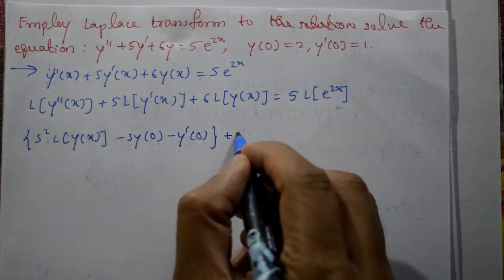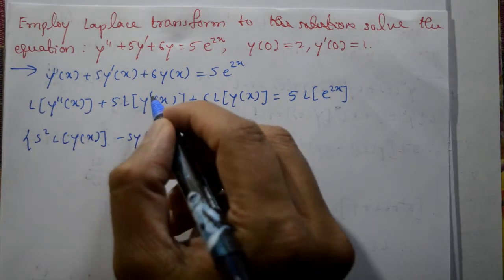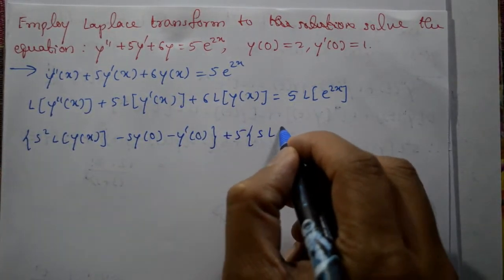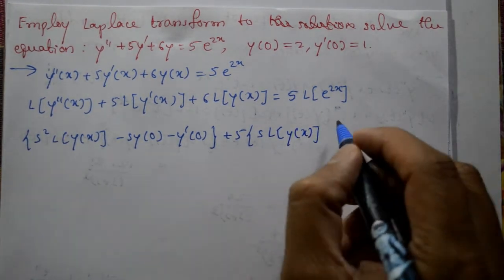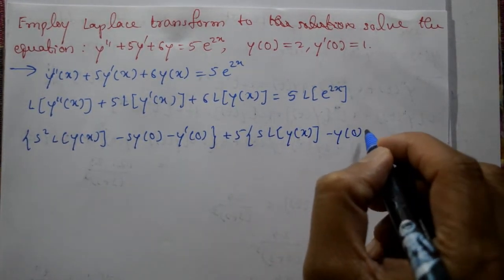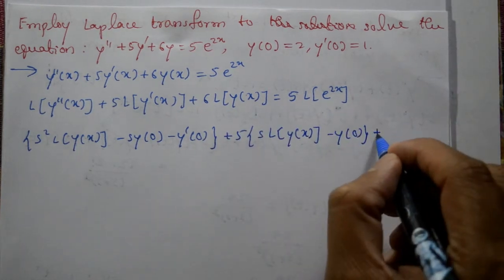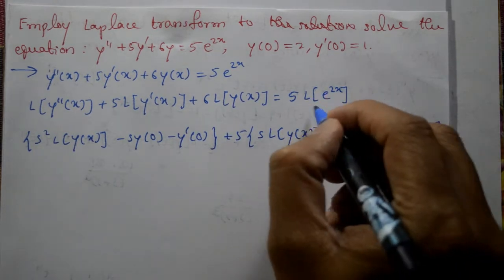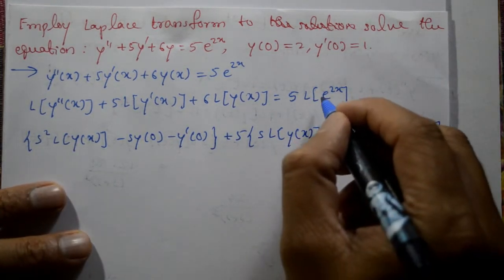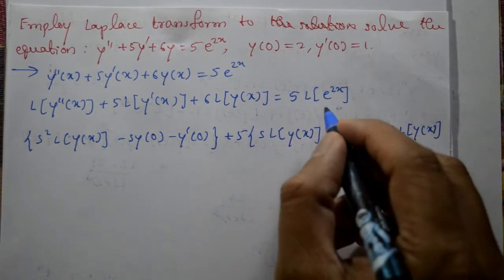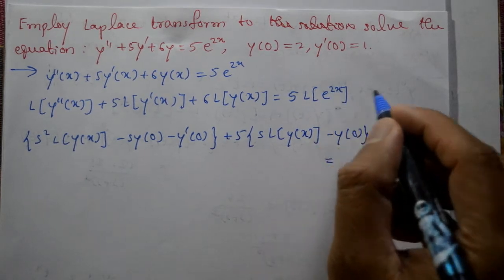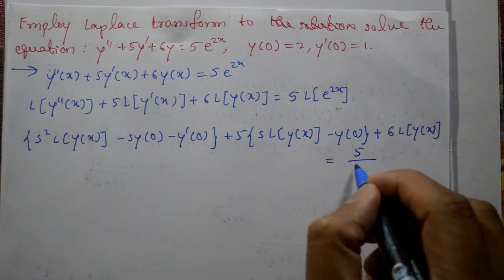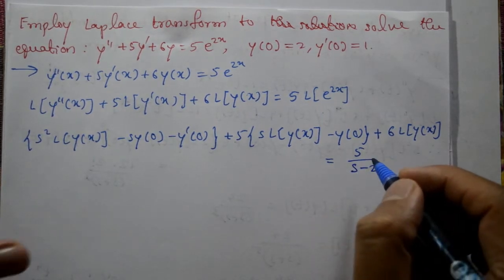The first term is done. Plus 5 into Laplace of y dash of x, so s into Laplace of y of x minus y of 0. Second term done. Third term as it is: 6 into Laplace of y of x. Using standard property, that is equal to Laplace of e raise to 2x which is 1 by s minus 2, so 5 divided by s minus 2.